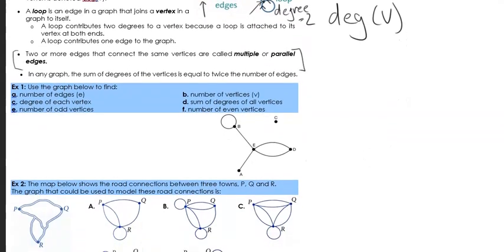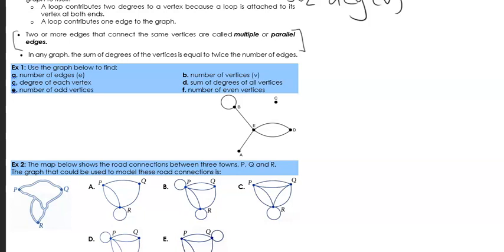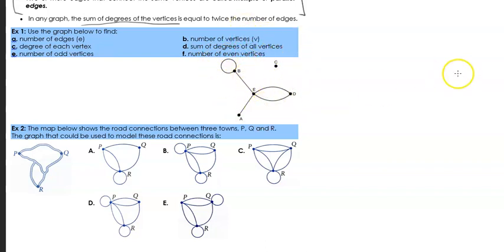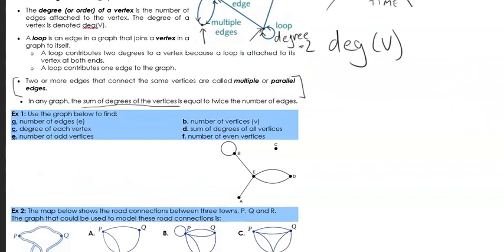In any graph, the sum of degrees of the vertices is equal to twice the number of edges. So if we get the degree of each vertex and sum them all up, it should equal twice the number of edges we can see within the graph. Remember, an edge is just one of those lines. A loop counts as degree two for its vertex, but the loop itself is still just one edge.